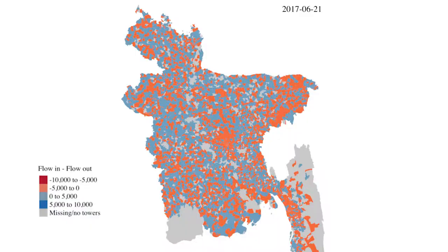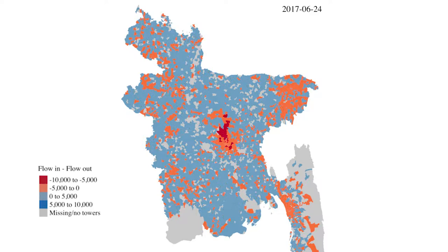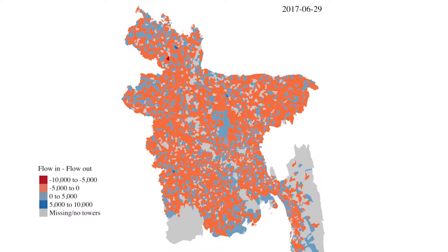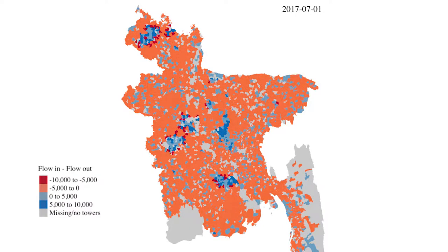My group uses mathematical models that combine different types of data from new technologies, whether that's genetic information about the pathogen itself, or different types of data streams on human migration and mobility from mobile phones and satellites and other data sources like that. We combine these different data sets using models to understand the spatial dynamics of disease transmission.